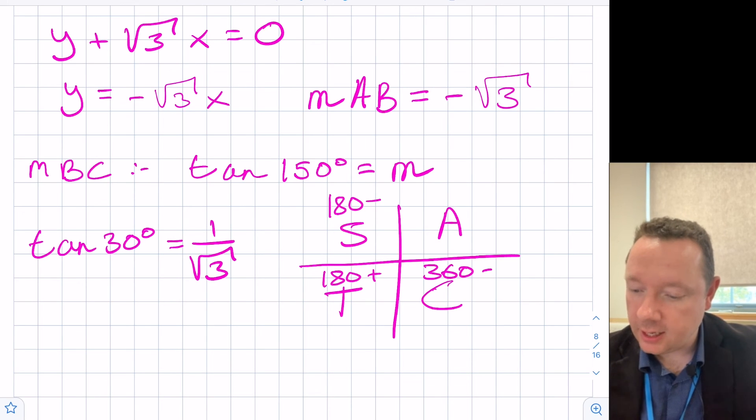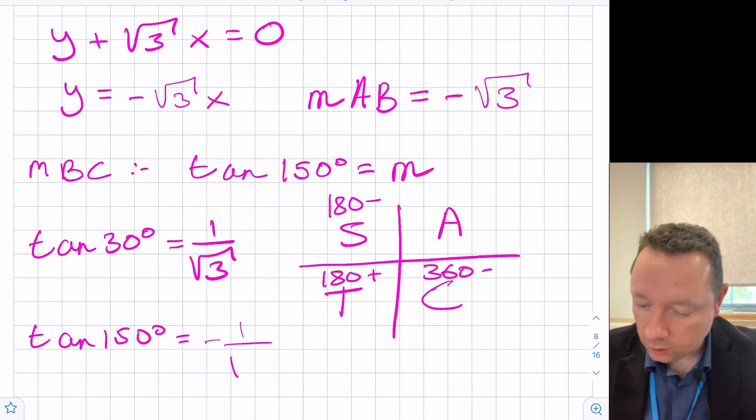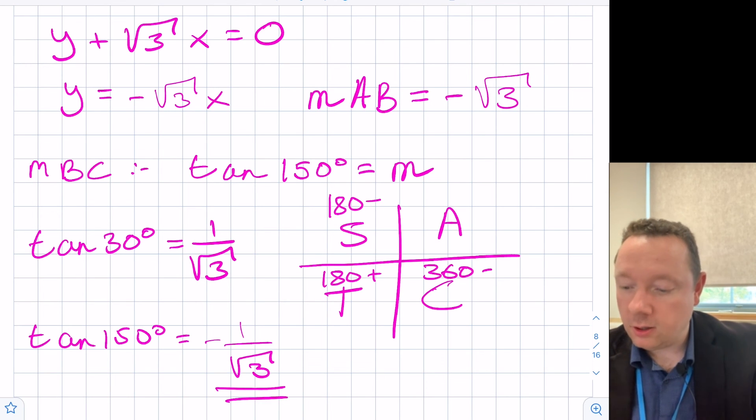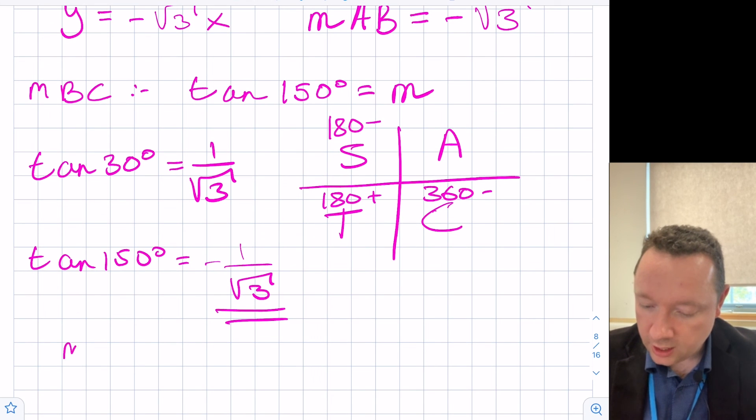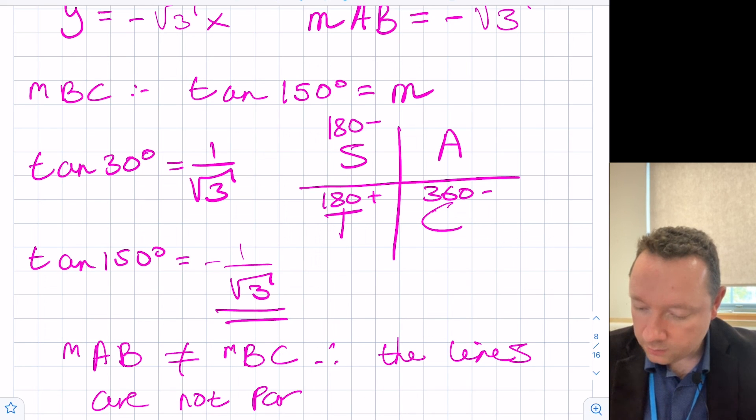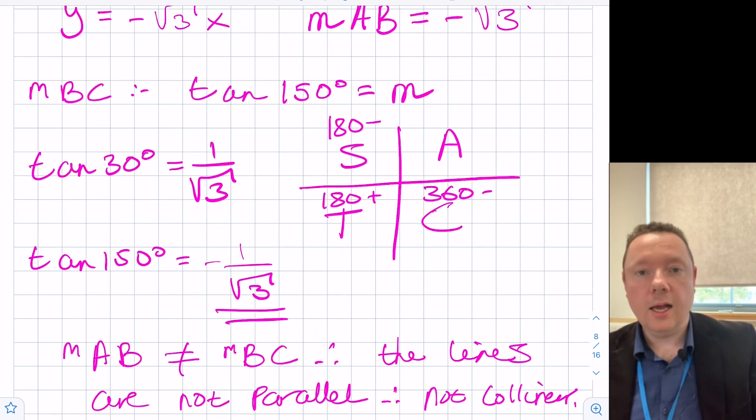So that means that because of the related angle, if it was in this quadrant, 180 - 150 would be 30. The tan here is negative. So tan 150° is -1/√3. We've now worked out our gradients. We know the gradient of AB is -√3, and the gradient of 150 degrees is -1/√3. So these are not parallel lines because they do not have the same gradient. So we could just write a little statement. The gradient of AB does not equal the gradient of BC. Therefore, the lines are not parallel and therefore not collinear.